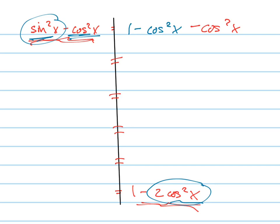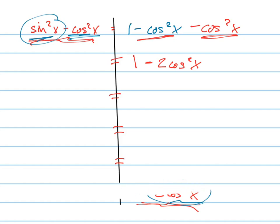Now what can I do with the cosine squared? What's negative cosine squared minus cosine squared? It's negative two. So what do I have? I have one minus two cosine squared x. Look at that — that's my answer! It was actually a simple two-step problem once I found the first step quickly and easily.